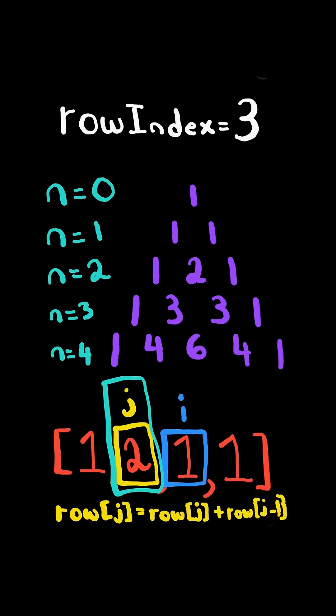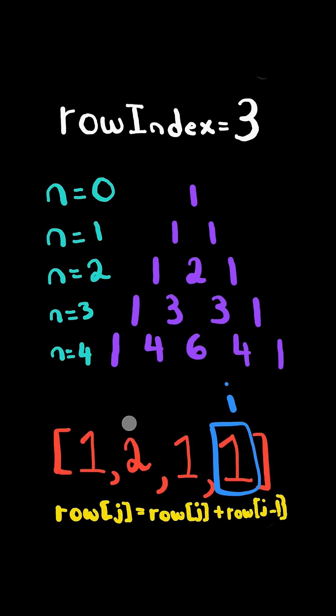When j reaches the second element, we stop the loop and we advance i, and we reset j to be behind i. We compute the value at j by summing it with the previous value, and we decrement j and we continue.